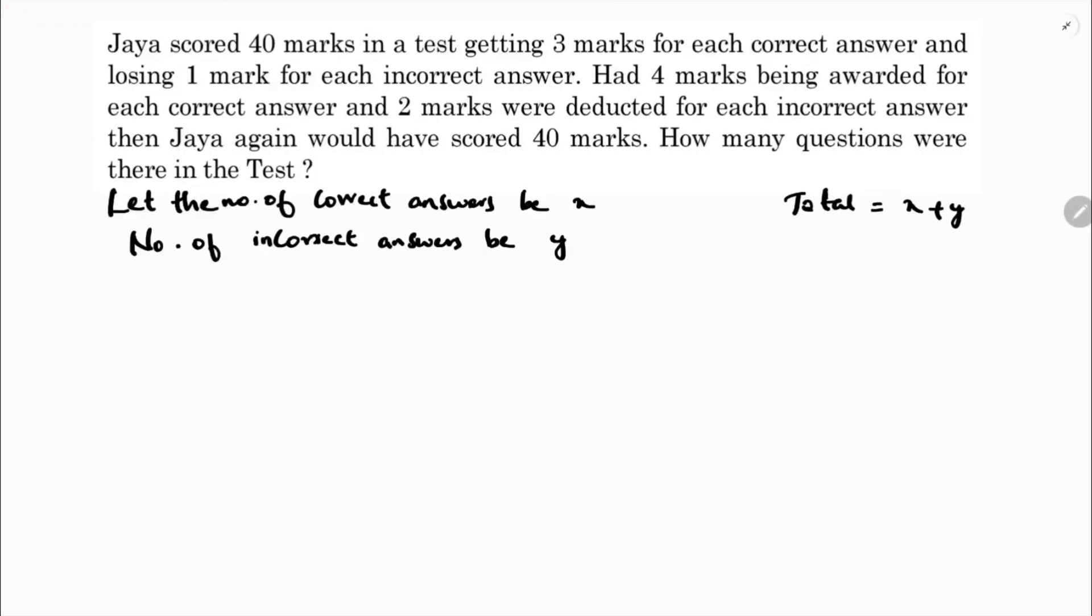According to the question, Case 1: 3 marks awarded for correct answers and deducted 1 mark for incorrect answer. So number of correct answers is x. 3 marks awarded for x and 1 mark lost for wrong answers, minus because marks deducted. The result would be 40.